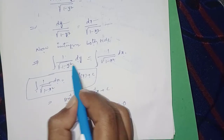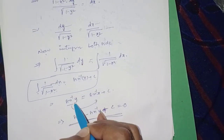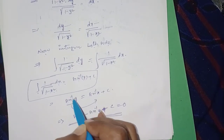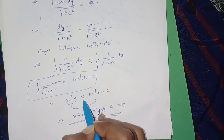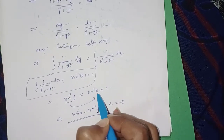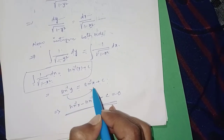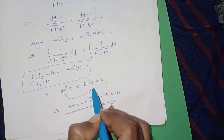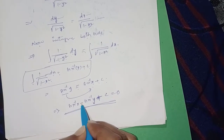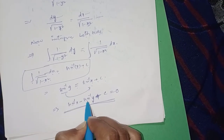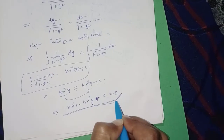Here x is x and y is y, so sin inverse of y on the LHS equals sin inverse x plus c on the RHS. Therefore sin inverse x minus sin inverse y plus c equals 0 is the final solution.